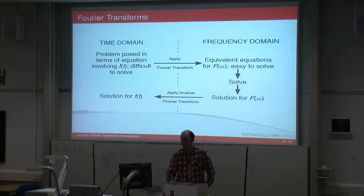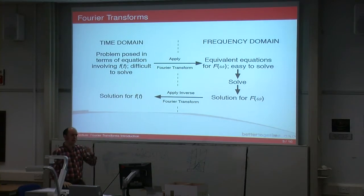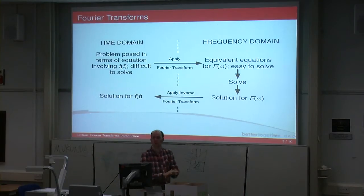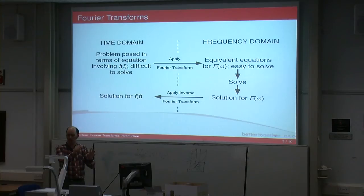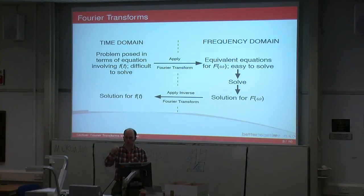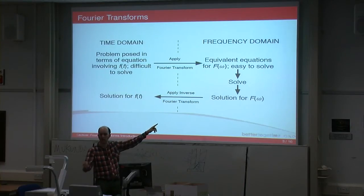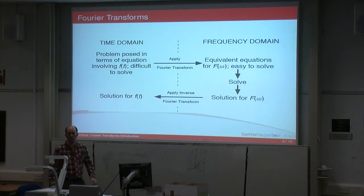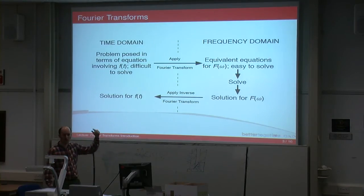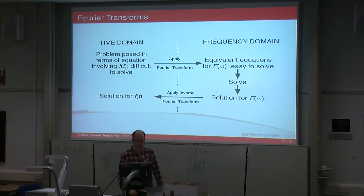Back in the days before calculators, when you had a big multiplication to do, you may have heard of log tables. If you've got the log of two numbers multiplied together, that can be written as the log of one number plus the log of another, and adding is a lot easier than multiplying. You look up the logs in the table, add them together — you're in the log domain — then take the anti-log to get back. It's a similar multi-step process: transform to another domain, solve it, then move back. That makes things a lot easier.